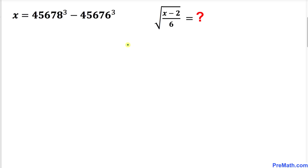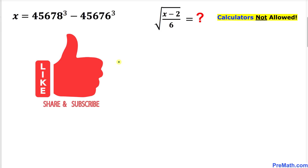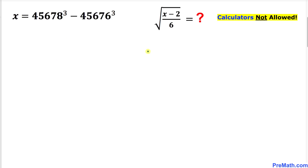Welcome to pre-math. In this video lesson we have a really interesting problem: x equals 45678 cubed minus 45676 cubed, and we are going to find the value of the square root of (x minus 2) divided by 6. We are not supposed to be using calculators of any kind. Please don't forget to give a thumbs up and subscribe, so let's get started.